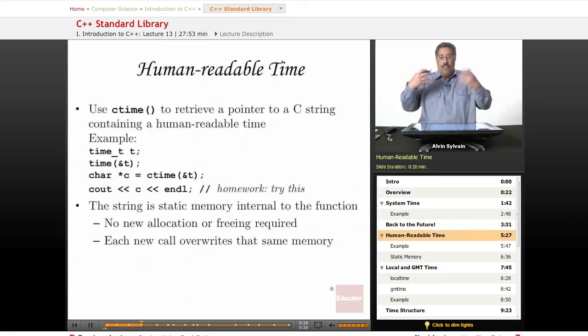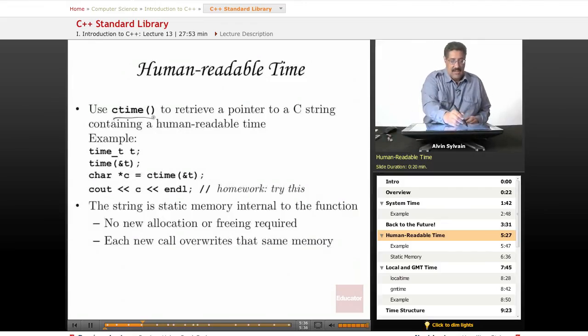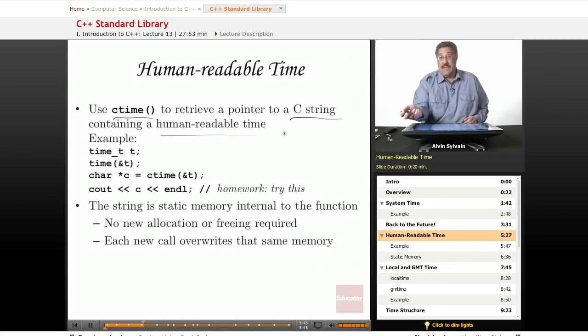We've got the time. We want to see it. Humans like to see the time. We don't want to see this big, long number. We don't know what it means. So we have a ctime function, which retrieves a pointer to a string, cstring array, which contains the human readable time. So as an example,